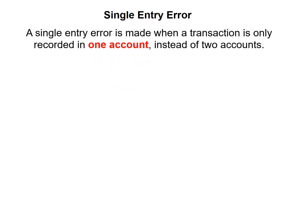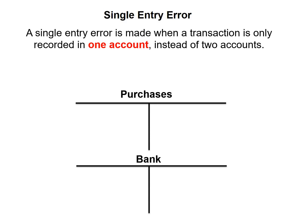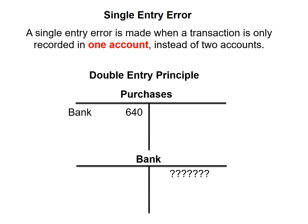Our first error is the error of single entry. An error of single entry is made when a transaction is only recorded in one account instead of two accounts. For instance, purchases is debited with 640 but nothing is recorded in the bank account. So our double entry principle is not followed with this error.